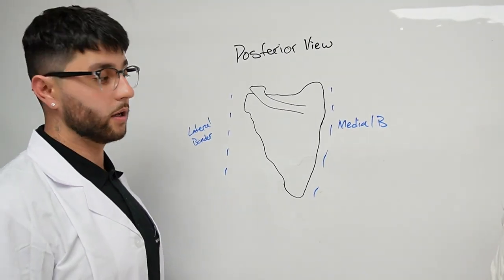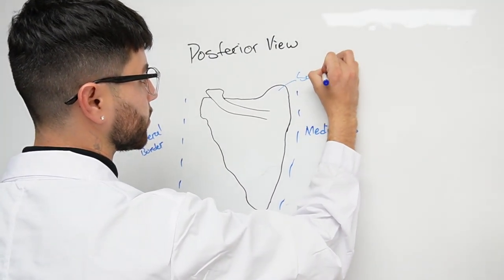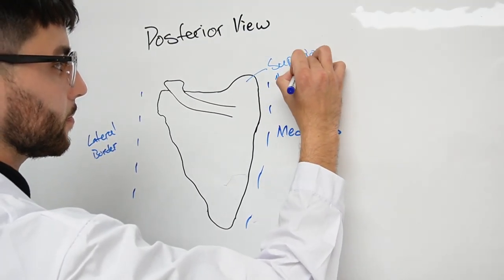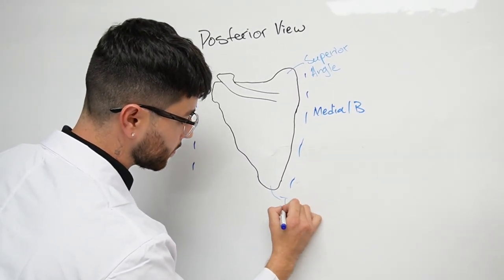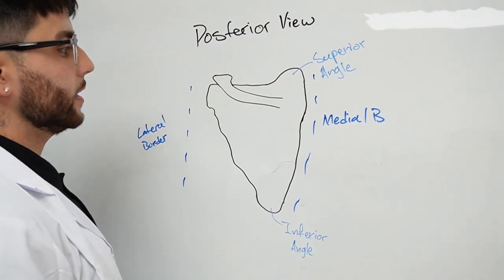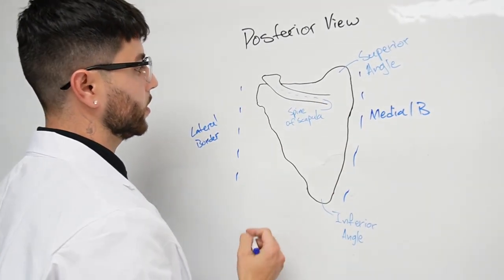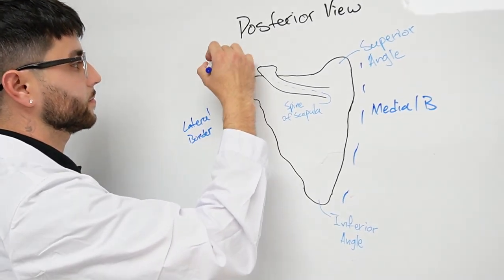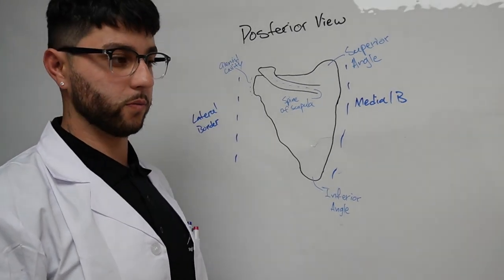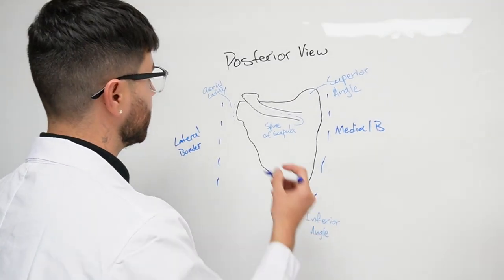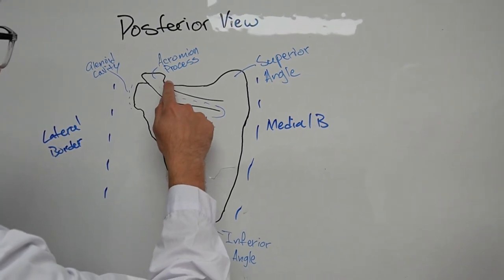Now let's label the anatomy of the scapula. You've got the superior angle. Remember, every time there is a superior, there is an inferior. Then you've got the spine of the scapula, the glenoid cavity — you might not see it right away, but you will see it on the lateral view — and then you've got the acromion process. And for the fine details, you have a small scapular notch.